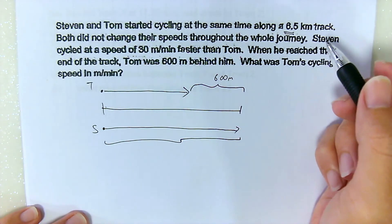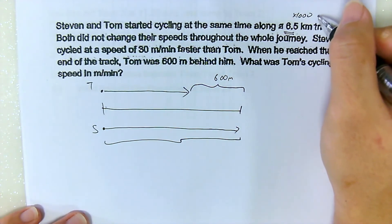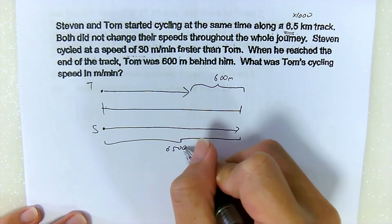6.5km converted to meters. So you have to multiply by 1,000. If you multiply by 1,000, it will become 6,500 meters.